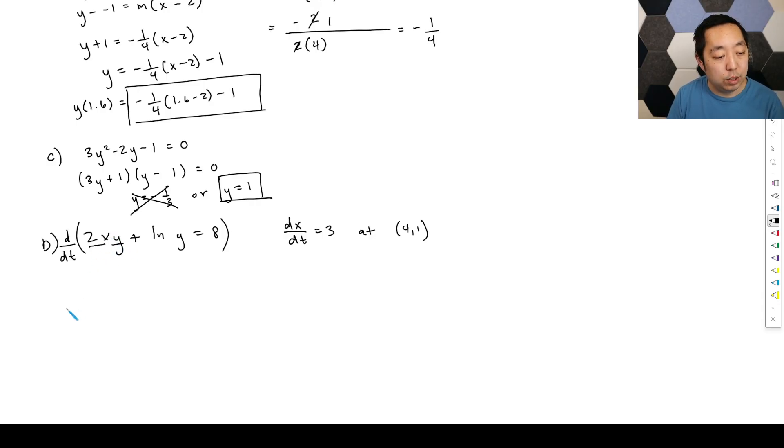So this is a product rule. So we're going to 2x times the derivative y, which is dy dt, plus derivative 2x is 2 dx dt times y. That's product rule there. Plus ln derivative ln of y is 1 over y. But then by chain rule, I need to pop out a dy dt. And I always make this mistake, but derivative eight is zero. It's not still eight, right? So take the derivative.